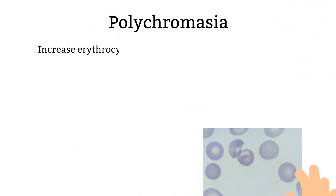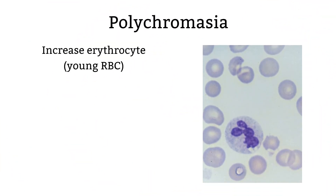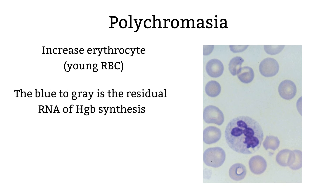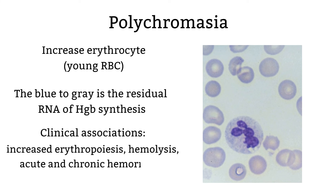Polychromasia is a term used to describe an increase of reticulocytes, or young red blood cells, in peripheral blood. The red cell is slightly larger than normal red blood cells and stains differently — it stains blue to grey. The blue to grey color is the residual RNA of the red blood cell synthesis. Here are some diseases that associate with polychromasia.